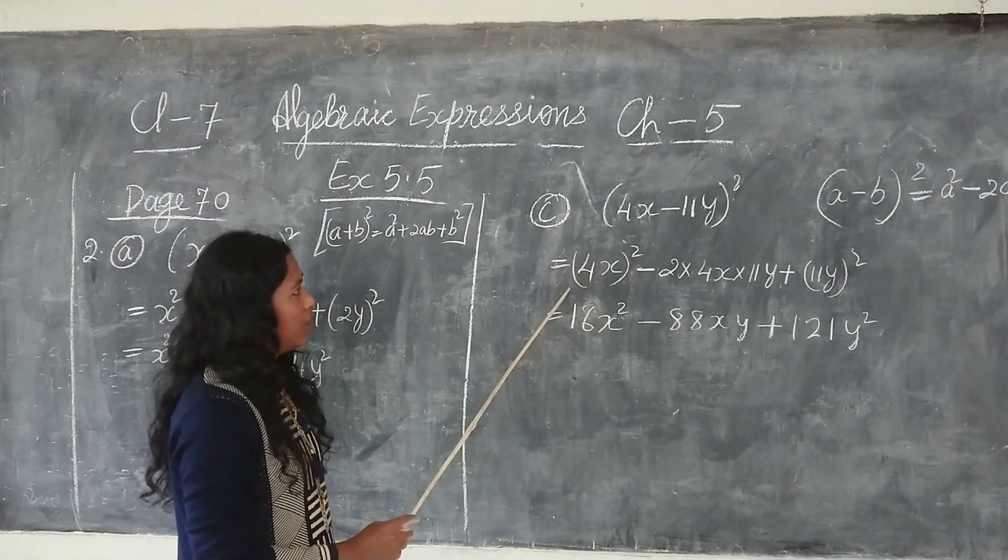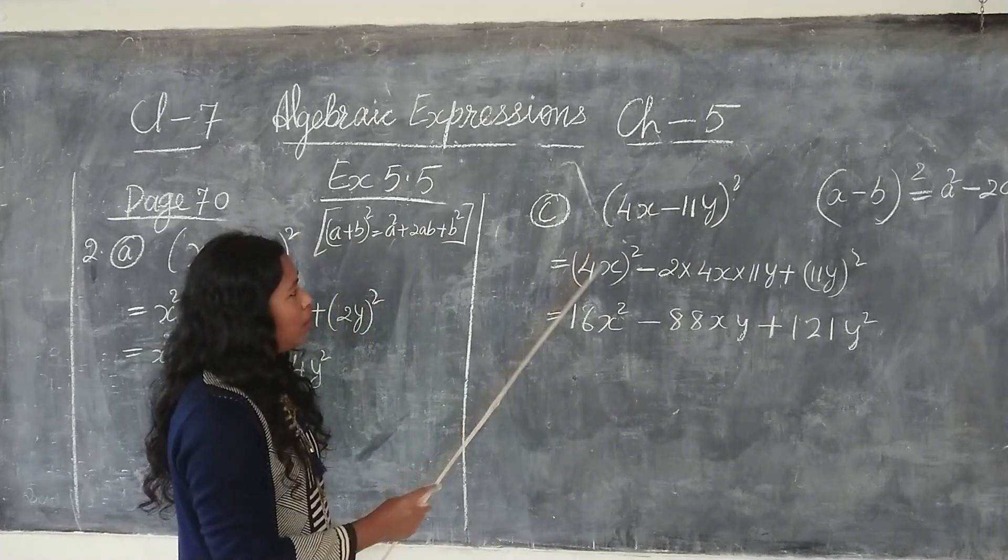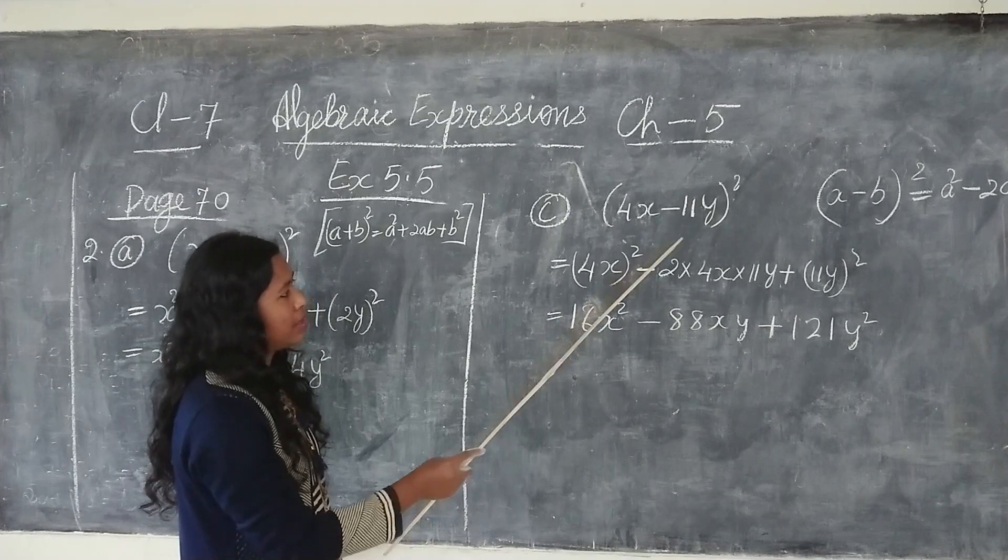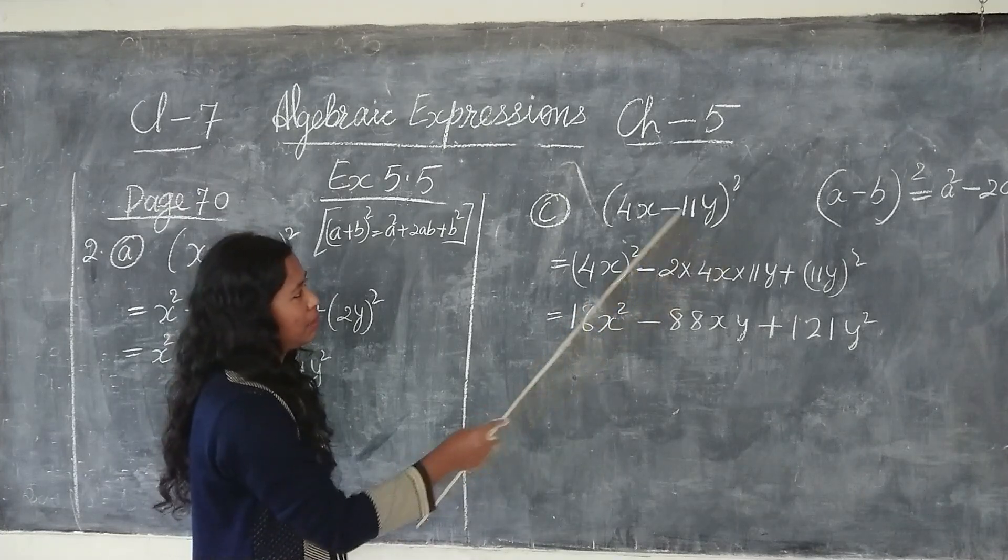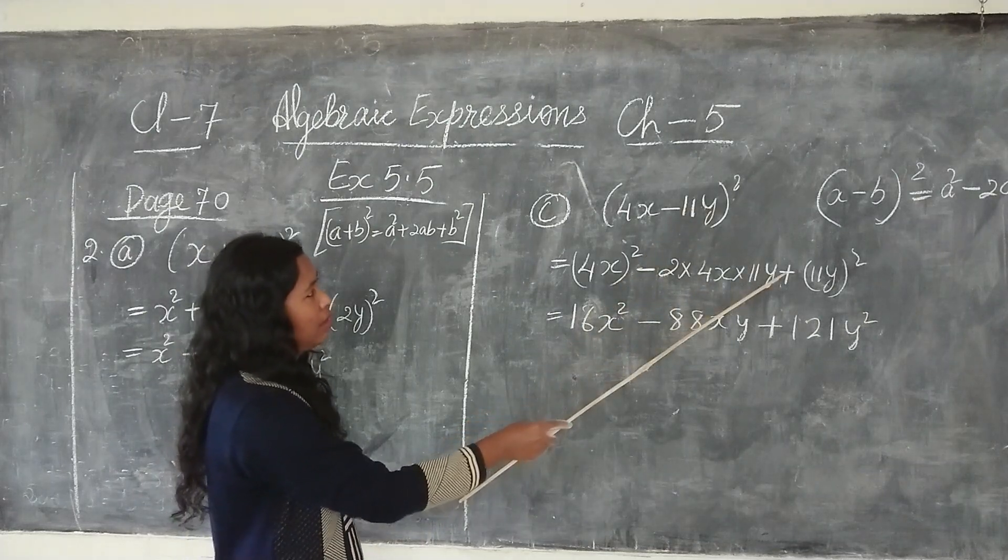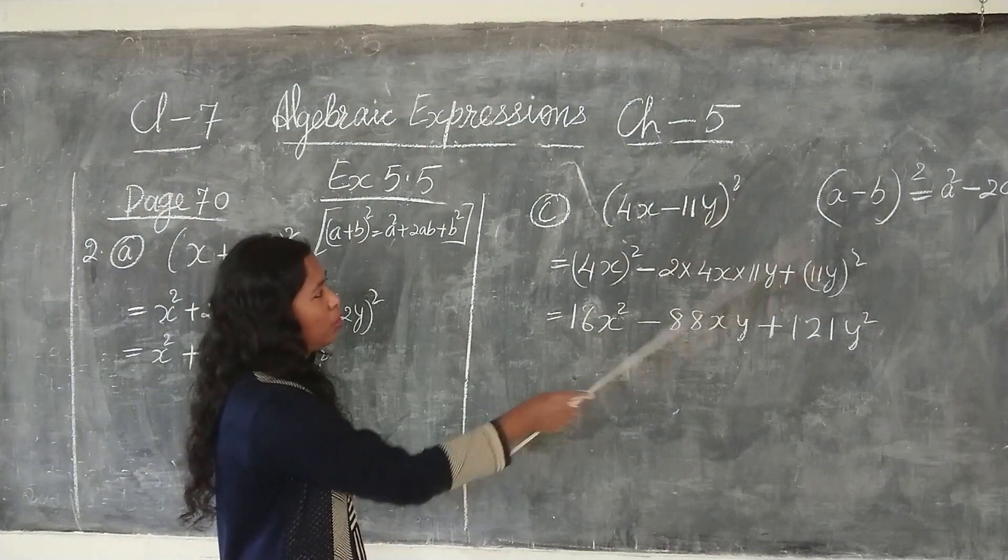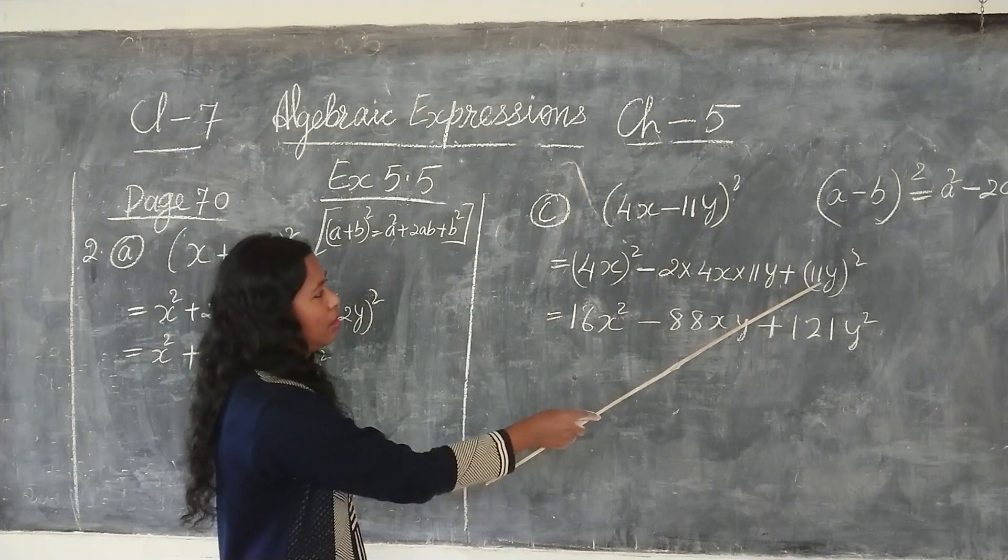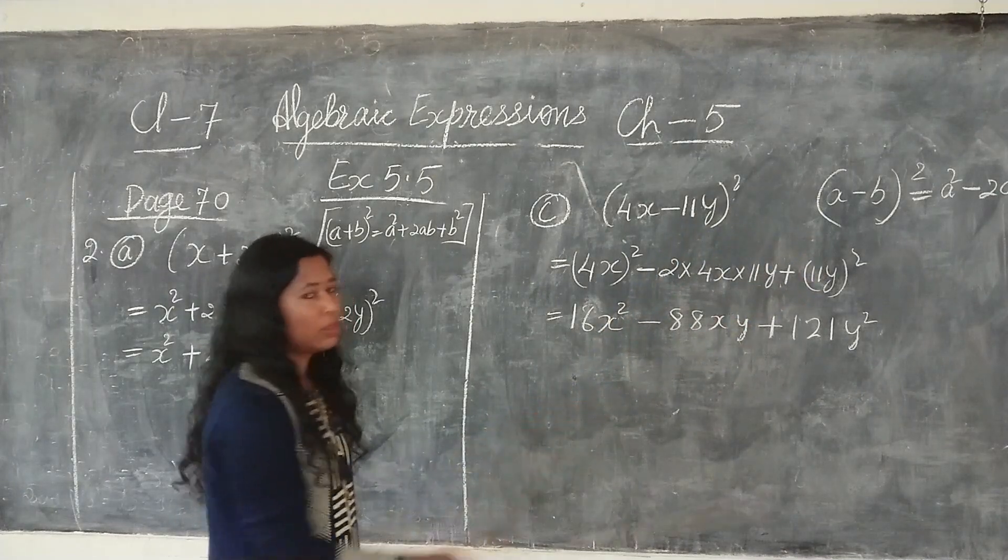So we are following the formula here. So here 4x the whole square minus 2ab. That means ab is here 4x, then b is 11y plus b the whole square, so 11y the whole square.